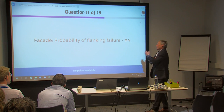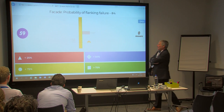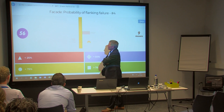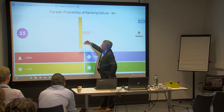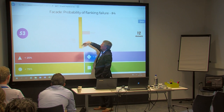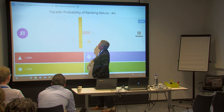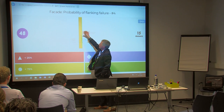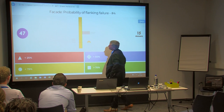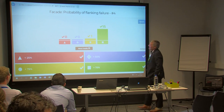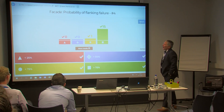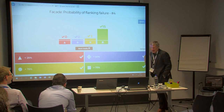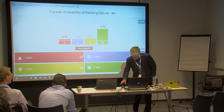The fourth facade detail is the same as the previous but with combustible insulation material — steel cladding with combustible insulation going along the compartment wall. The group agrees easily: a high failure probability is expected.